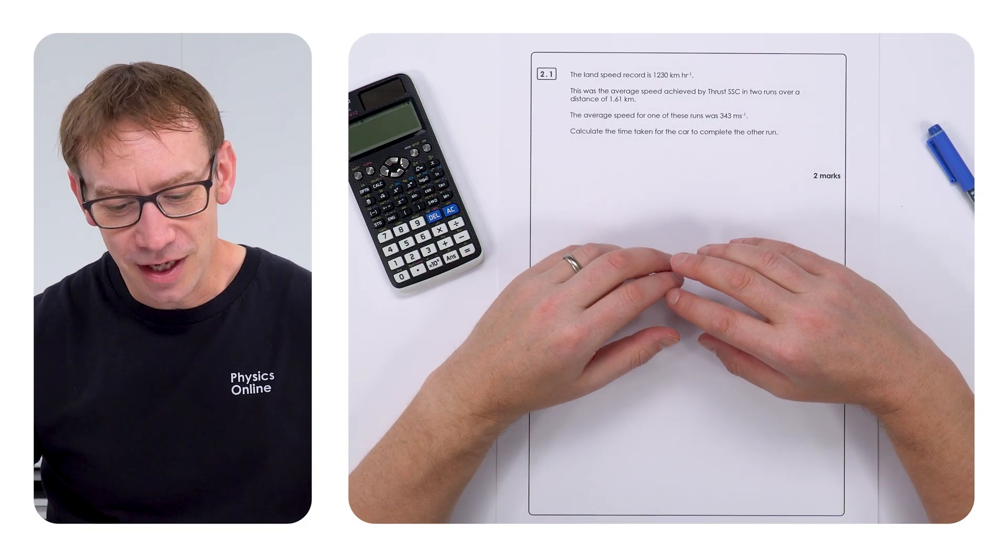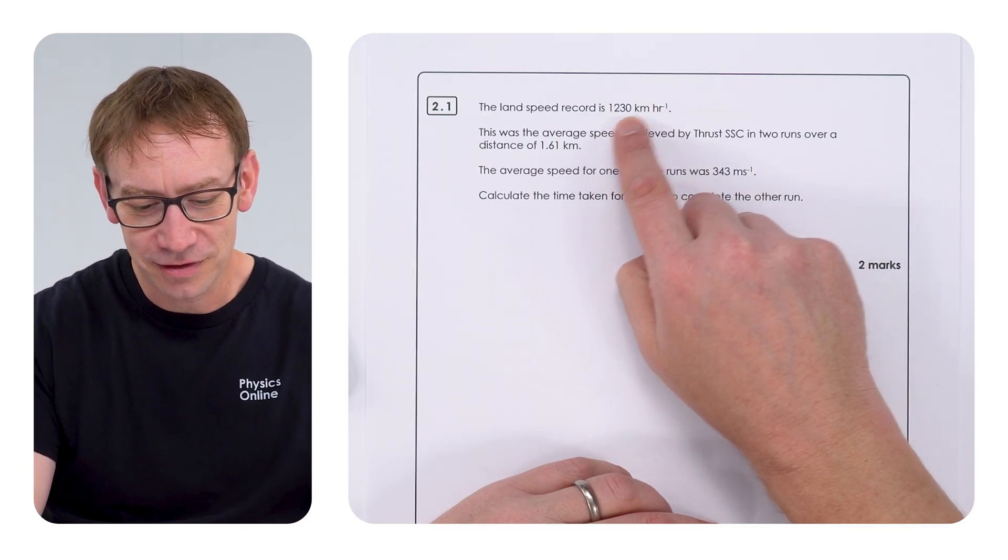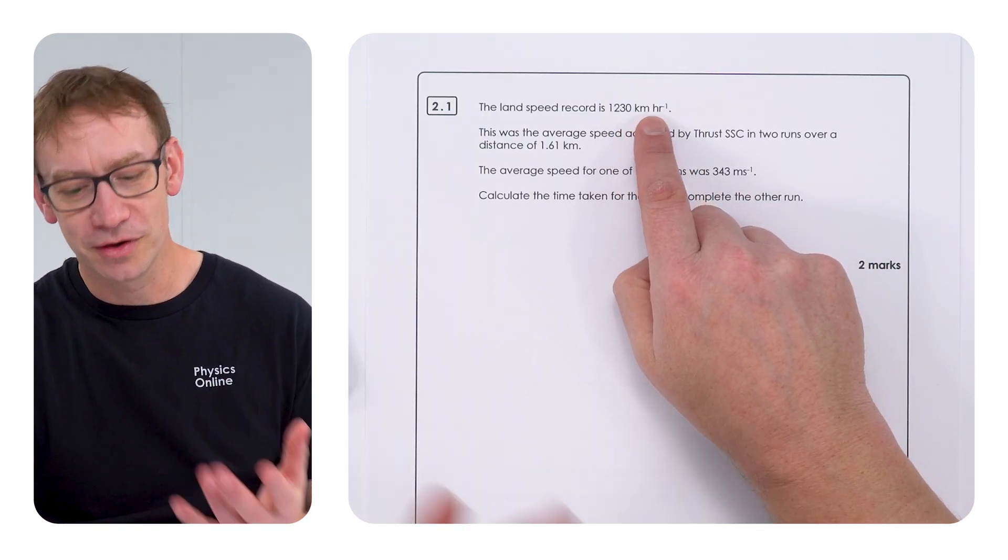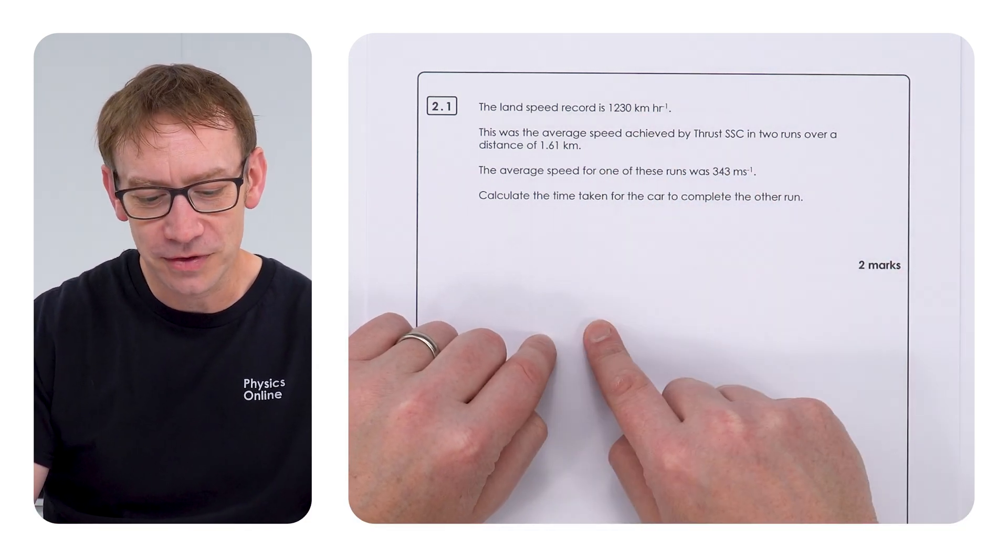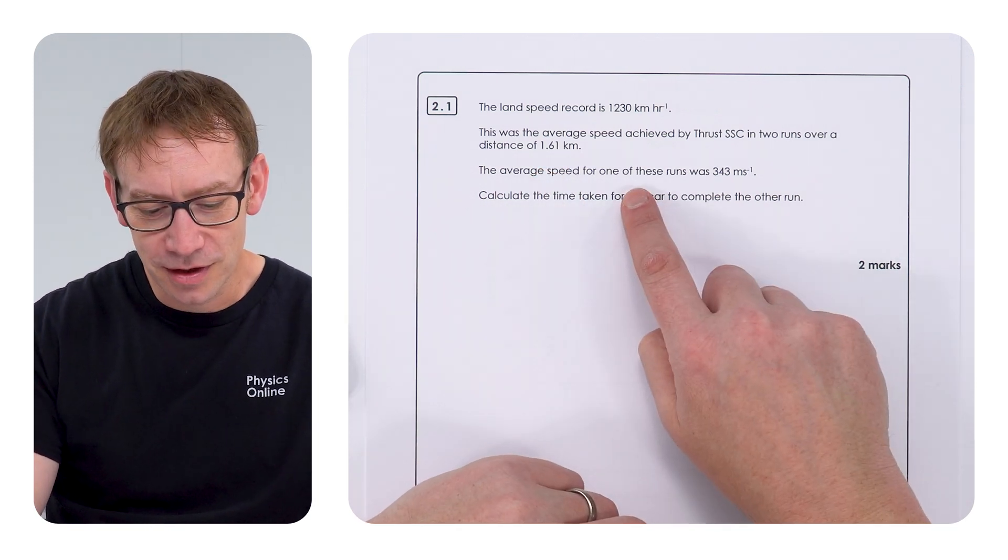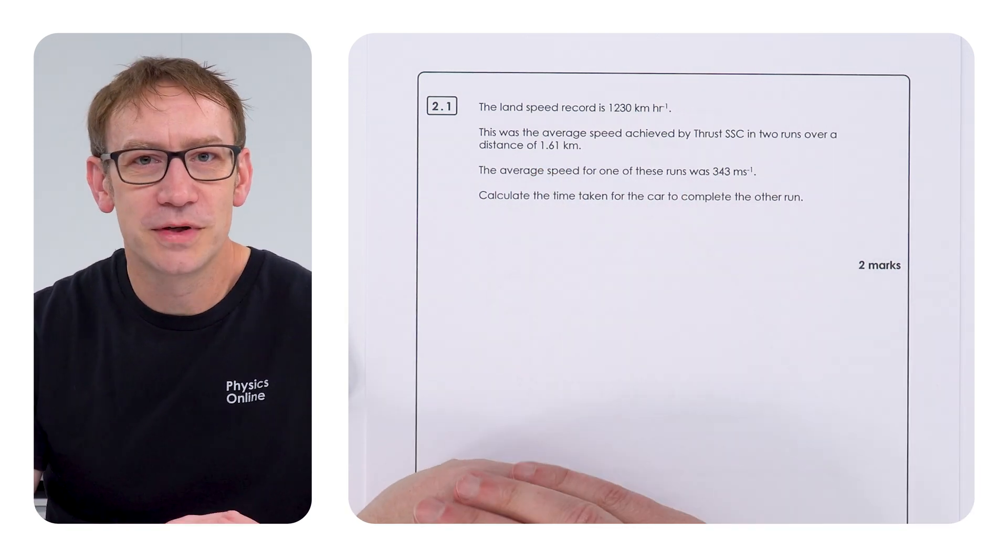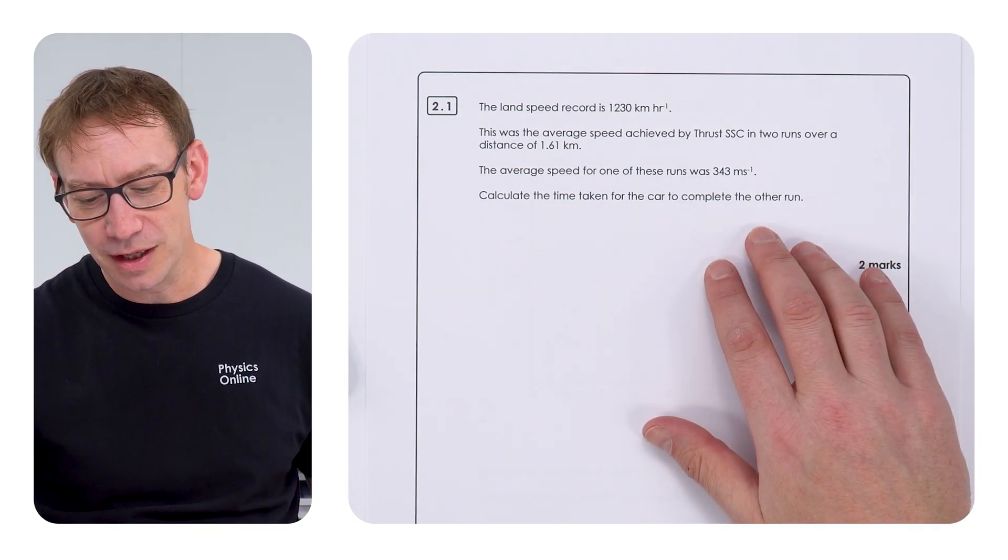So the question was about the land speed record for a car. They've got some data here so we've got the speed in kilometres per hour. It says that the average speed over two runs was taken, each of which was 1.61 kilometres. And then the average speed for one of those runs was 343 metres per second. Calculate the time taken for the car to complete the other run.